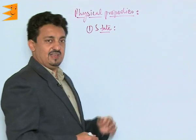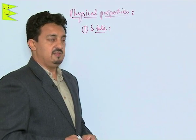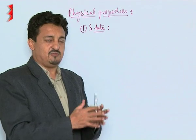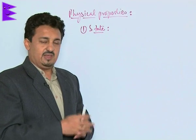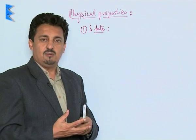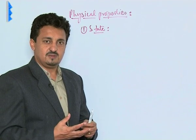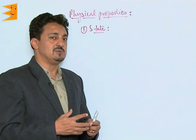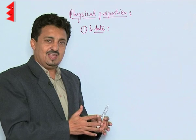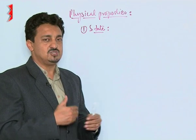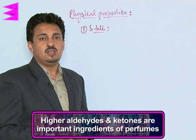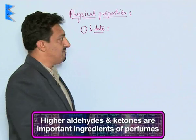Let us see the physical properties of aldehydes and ketones. First, their physical state: methanal, the first aldehyde, is gaseous in nature, and that is why its 40% aqueous solution is called formalin, which is used in the biolab for preserving specimens. Other than this, all aldehydes and ketones are colorless liquids, or the higher ones are solids. The lower aldehydes and ketones do not have a pleasant smell, but as the carbon chain increases their smell becomes more and more pleasant — that is why the higher aldehydes and ketones are very important ingredients of perfumes and deodorants.